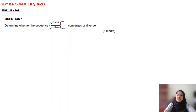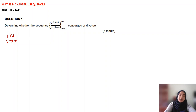For chapter 1, the question will ask you about the sequence. This is the question from February 2021. Question number 1: determine whether the sequence converges or diverges. You know that this is a sequence, and what you need to do is start with limit approaching to infinity. Then copy back the function: 3e^(3x+1) over 4x² minus 4.